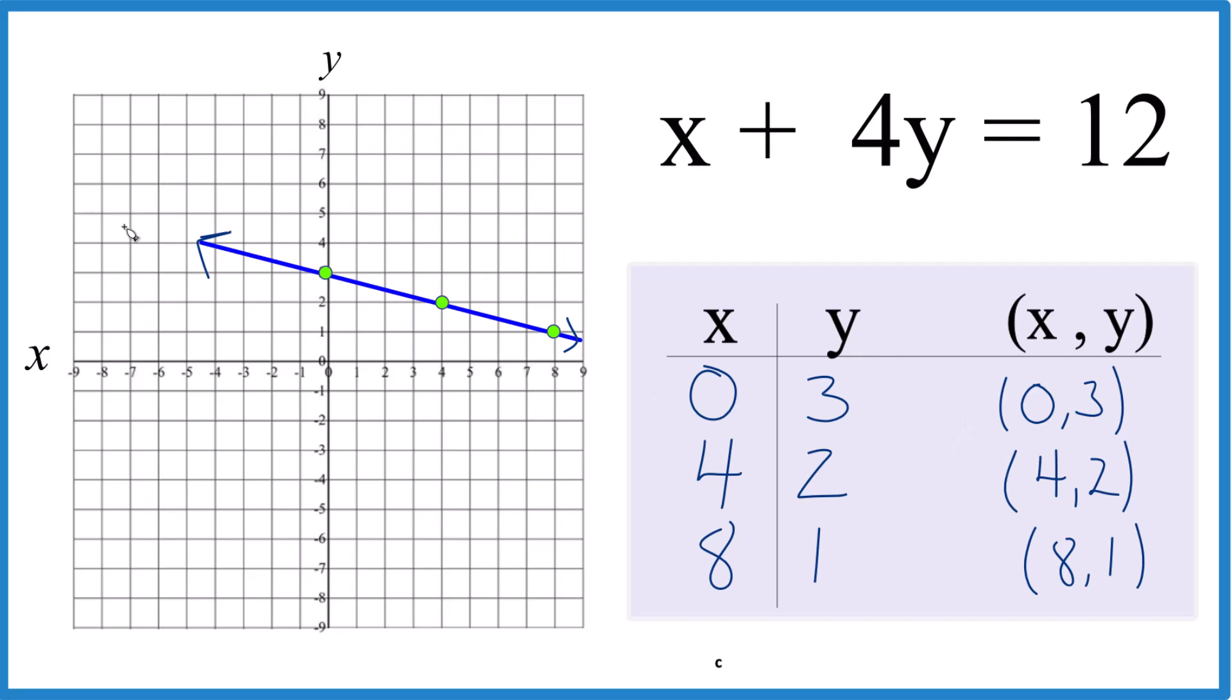You could have used slope-intercept form. You'd get the same line. And remember, these numbers here I made up. Then we figured out what y was. And we wanted the points to be whole numbers and to fit on the graph paper. So that's why I chose these.